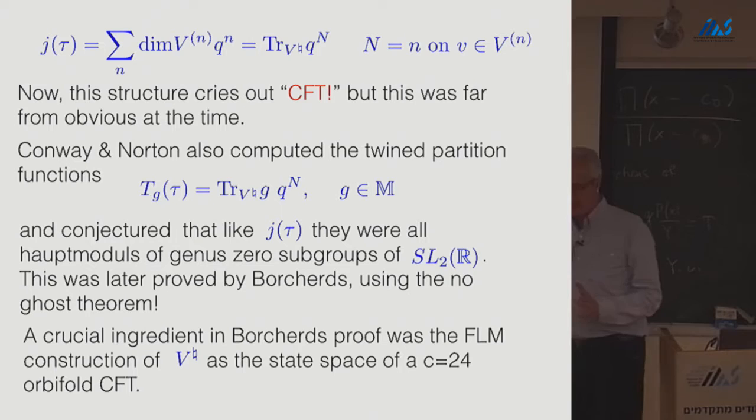And this fact was later proved by Borchards using, as one of the ingredients in the proof, the Nogos theorem of the bosonic string. Because, as I'll say later, when we put boundary conditions on a conformal field theory in the torus, we can put boundary conditions in the time direction and in the space direction. And often they're both called twisted, but it's useful to distinguish them and say I'm twining and twisting. So time twisted is twined, space twisted is twisted.